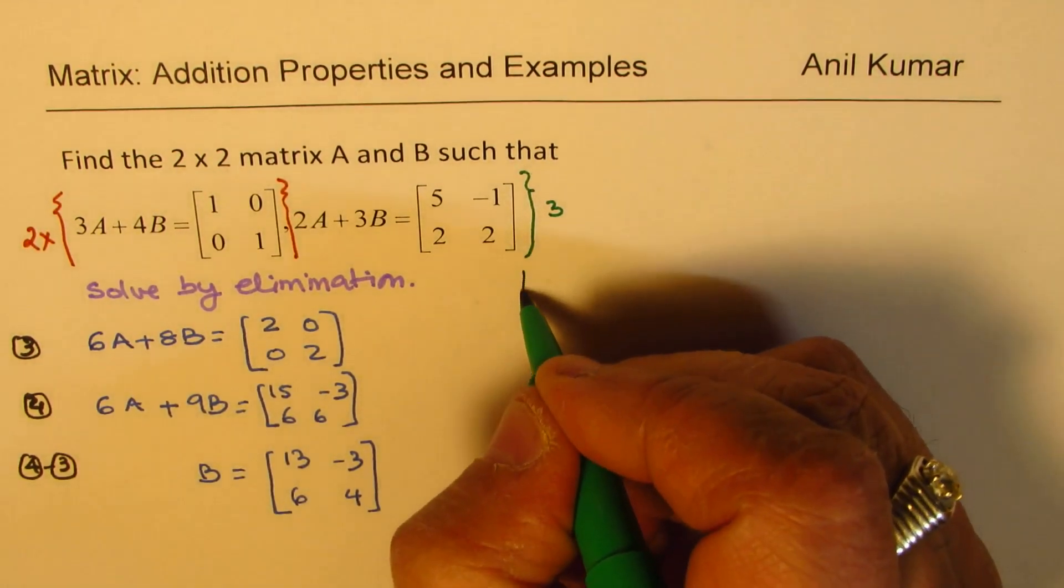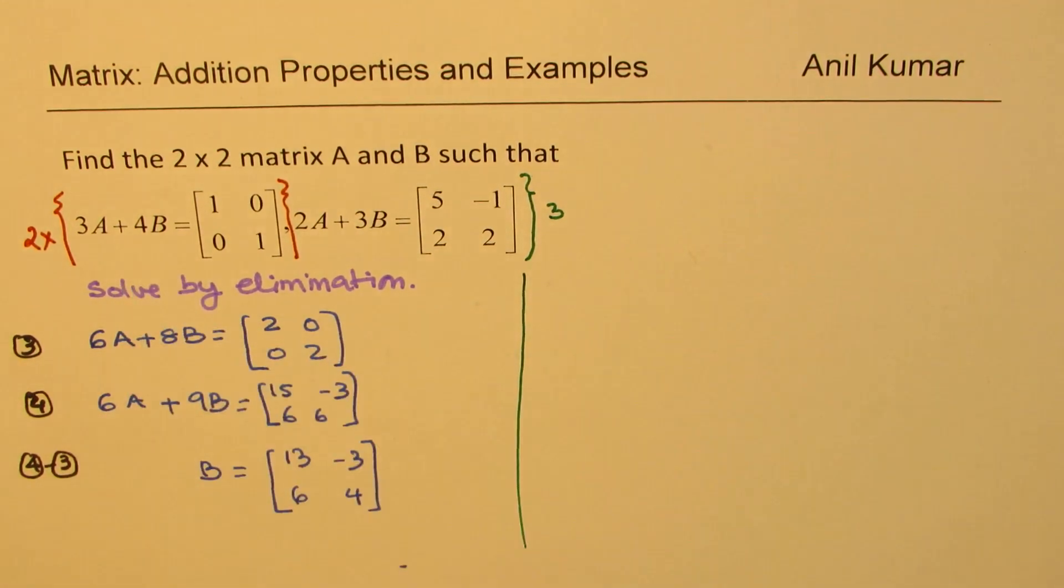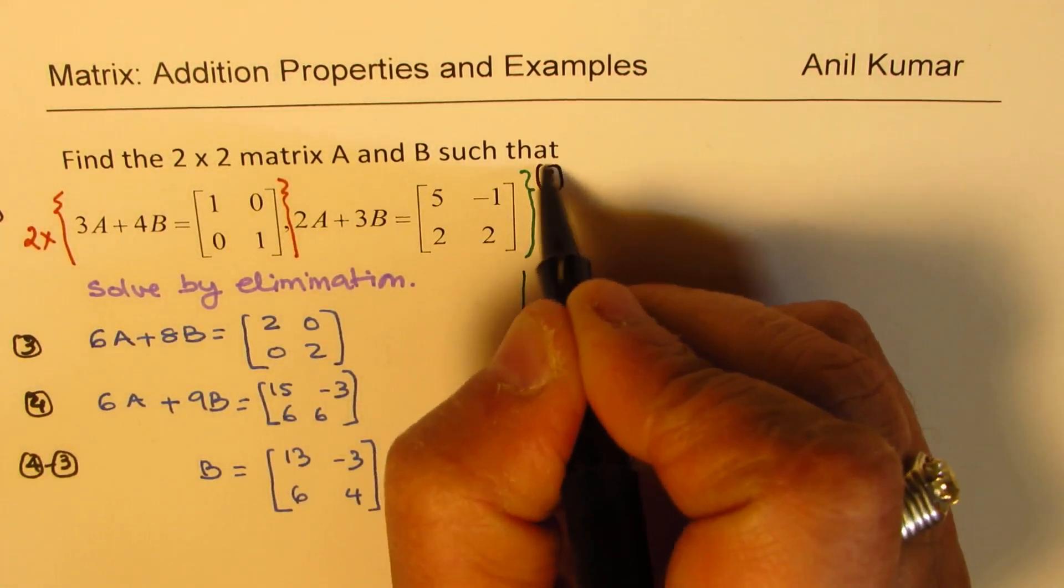Now we need to find what matrix A is. So we could use one of our equations and then solve for it. So let's use the second equation.